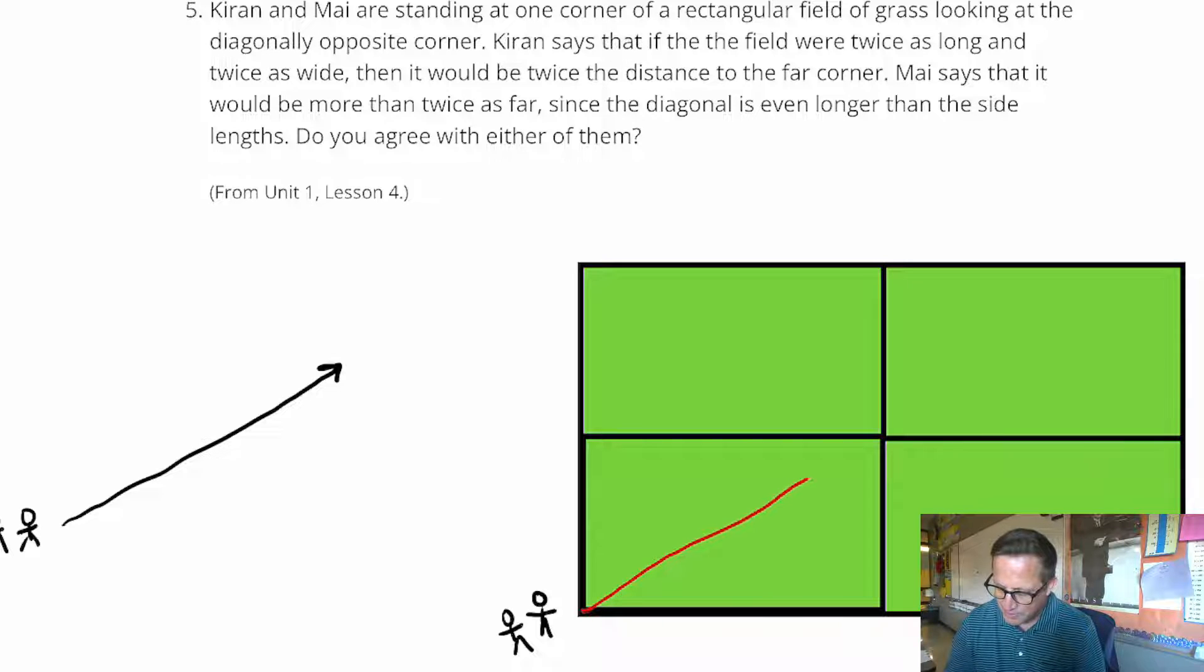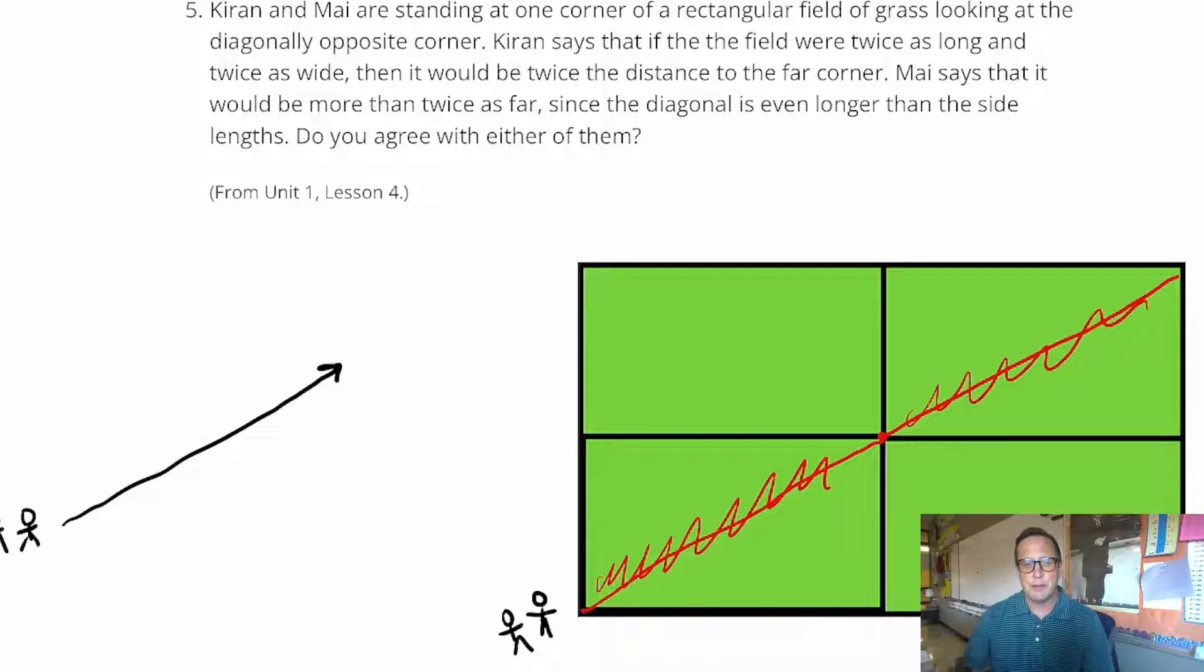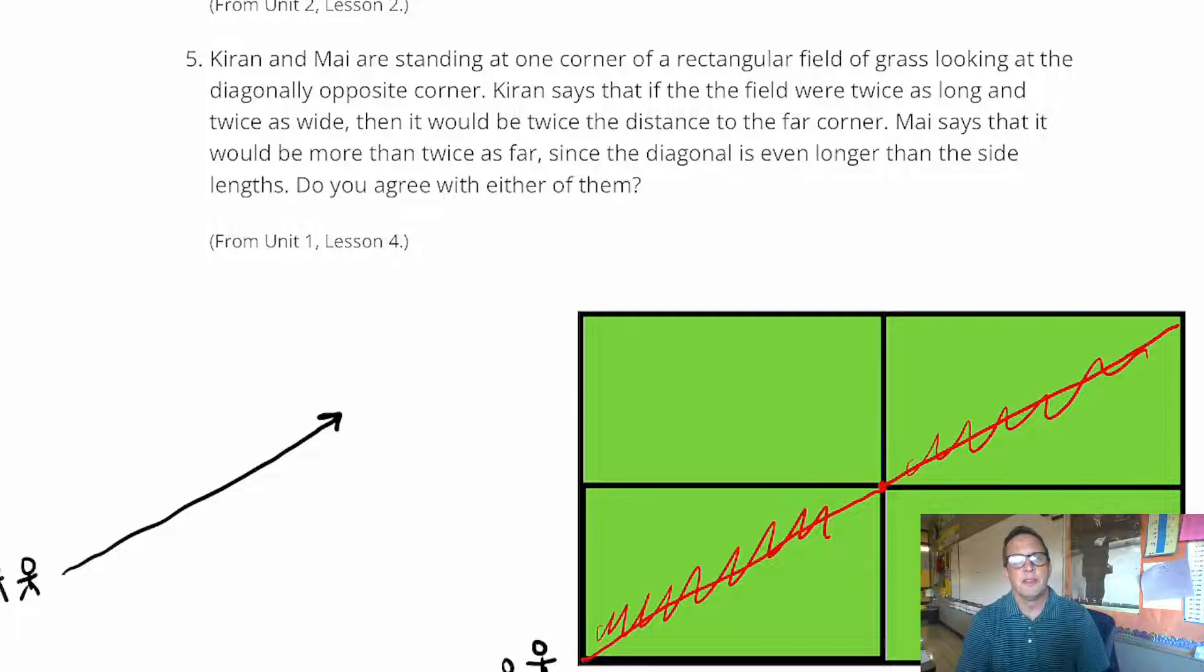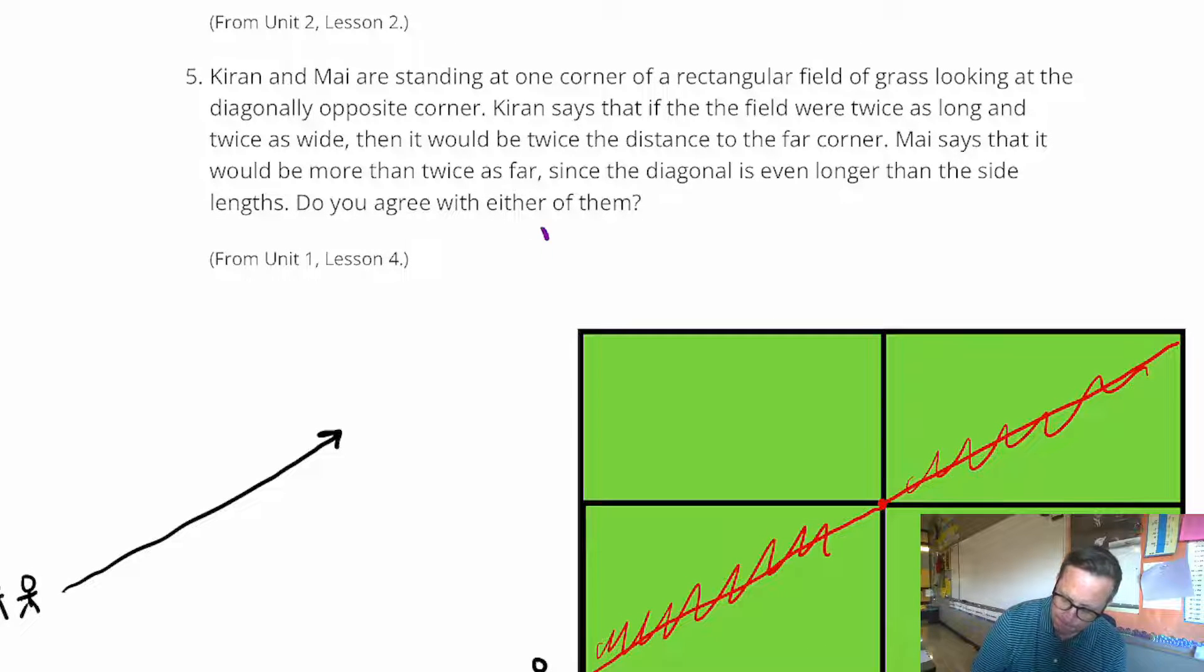But right here, that diagonal, yeah, that's twice, right? That's one diagonal. That's another diagonal right there, and that's got to be twice. So that confirms that the diagonal is twice as long. So who's right? That would be Kieran. Kieran is correct.